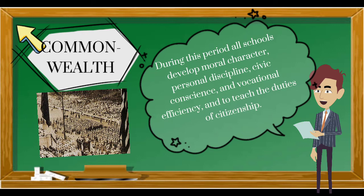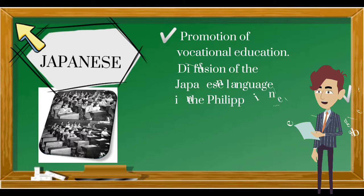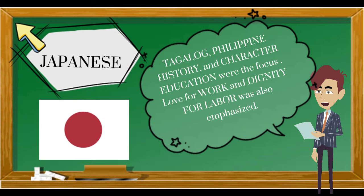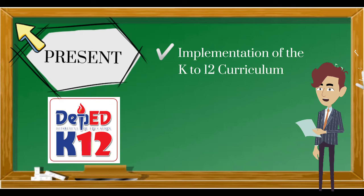During the Commonwealth period, all schools developed moral character, personal discipline, civic conscience, and vocational efficiency, and taught the duties of citizenship. During the Japanese period, Tagalog, Philippine history, and character education were the focus. Love for work and dignity for labor were also emphasized.